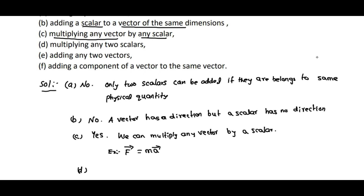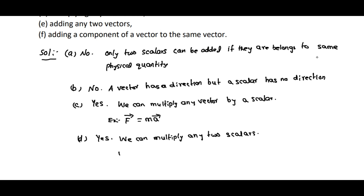Multiplying any two scalars — this is also meaningful, we can multiply any two scalars. For example, work done is equal to power into time taken. So power is a scalar quantity, time is also a scalar quantity; both are multiplied and this gives us work done.